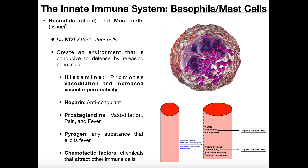When basophils migrate into particular tissues, they slightly differentiate — not enough to change their function drastically, but enough to change their name. Once they take up residence in tissues, they're called mast cells. So they're basically the same thing; we can treat them in the same way, just understand they're in a different location. Basophils are in the blood — B for B — and mast cells are in the tissues.